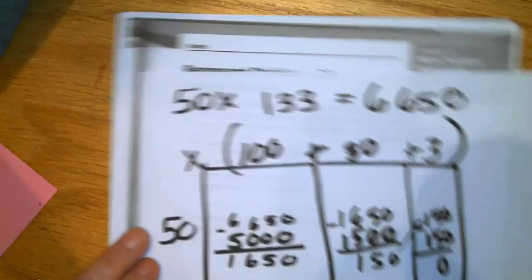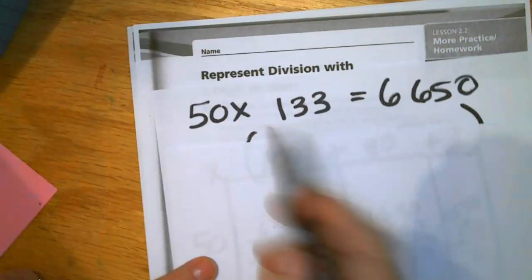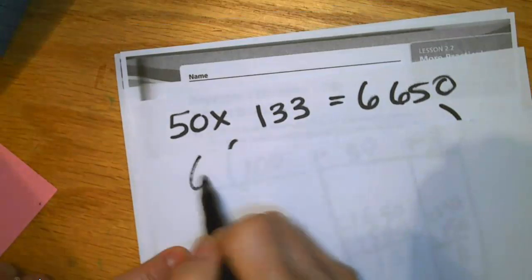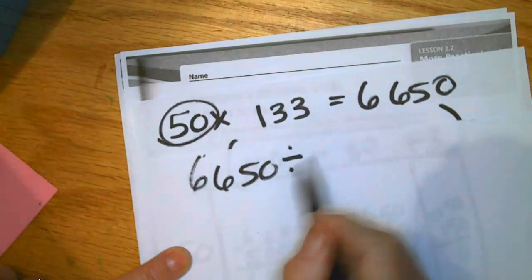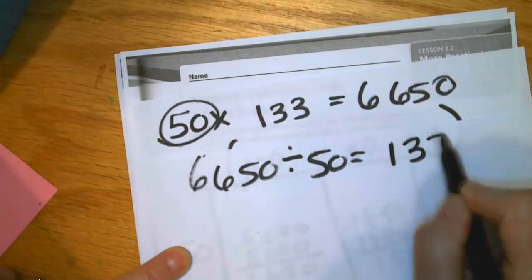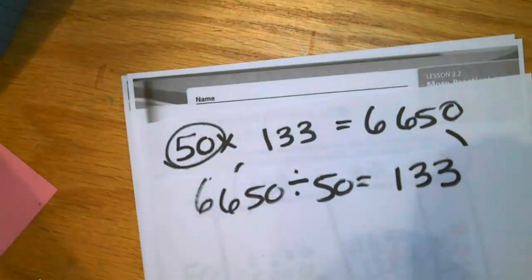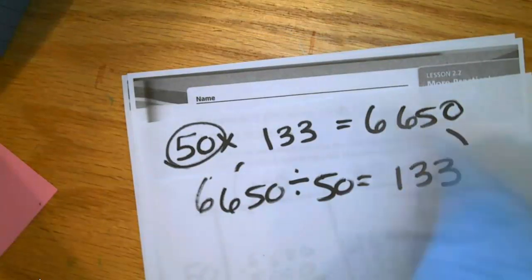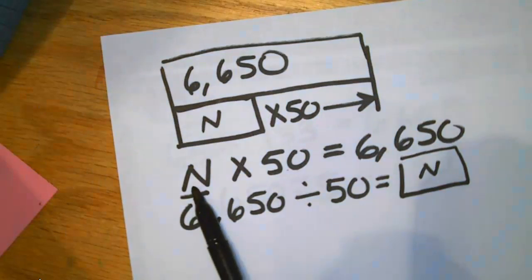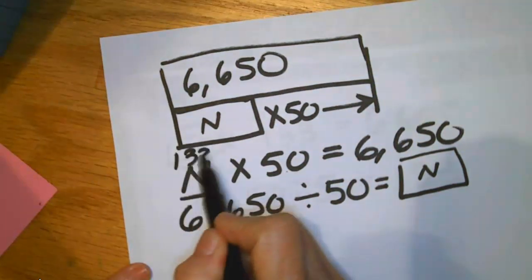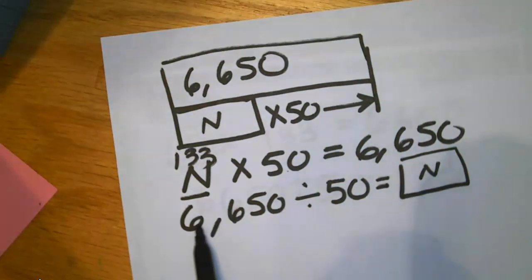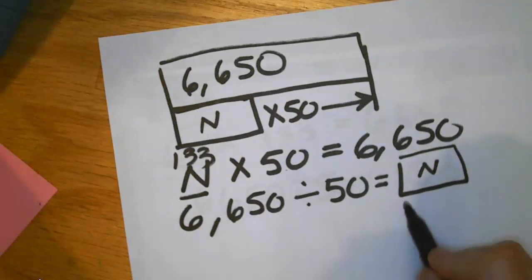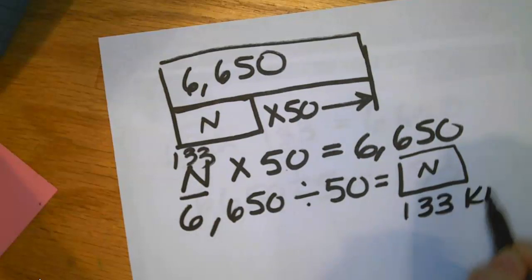And I'm going to use that information to solve my division problem. So I'm going to take what I know now: 6,650 divided by 50 is equal to 133. This tells me, back to my original problem, that since 133 times 50 is equal to the length of the Nile River, I can take 6,650 divided by 50 and get the length of the other river: 133 kilometers.